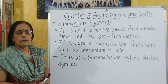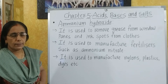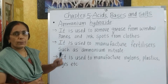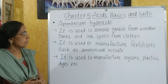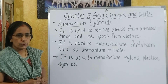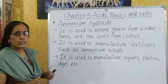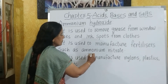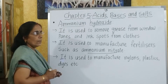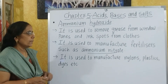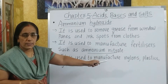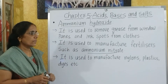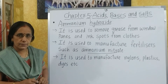Now we will see the uses of ammonium hydroxide. Ammonium hydroxide is a weak base. It is used to remove grease from windowpanes and ink stains from clothes. It is used to manufacture fertilizers such as ammonium nitrate. It is also used to manufacture nylons, plastics, dyes, etc., making it very useful in the chemical industries.